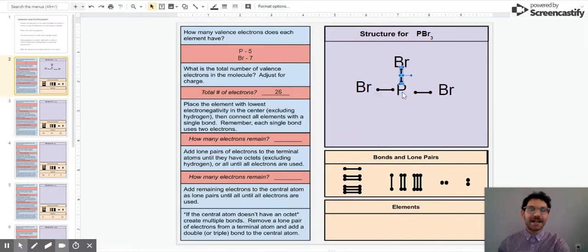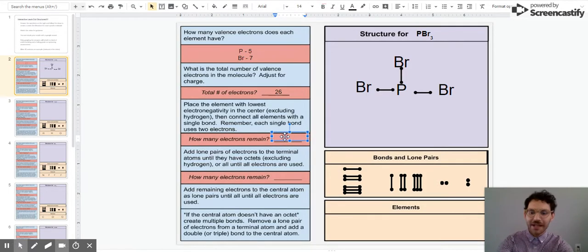You notice that each one of these bonds has two dots on the end. Those two dots represent two electrons because each single bond uses two electrons. So right now I've used six electrons. I have to use all 26 electrons to draw this. So how many electrons remain? I used six, so 26 minus six gives me 20 electrons left to use.